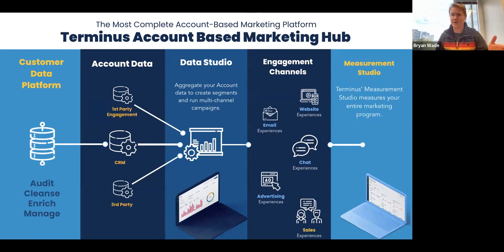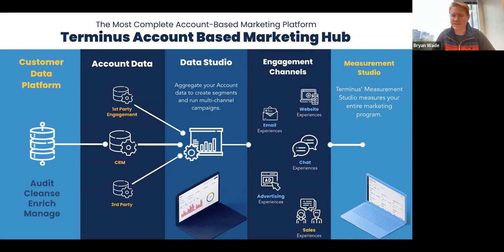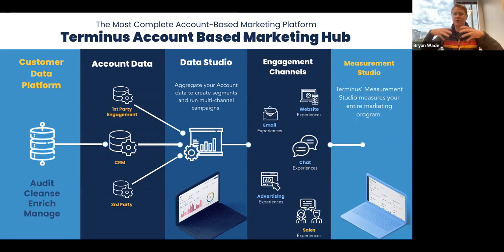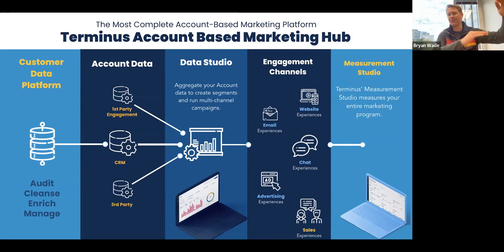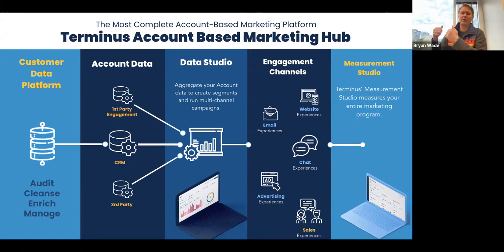It starts with our CDP. Terminus has a customer data platform that aggregates all of your first-party and our third-party data and brings it together into our Terminus Data Studio, or our account hub. That account hub connects into your CRM, your marketing automation, all of your first-party data, and allows you to create dynamic segments or lists of customers or accounts you want to go after. These could be top-of-funnel accounts, customer accounts you want to expand into, or industry/vertical-related segments. Those segments are then pushed into the channels — ad experiences, chat experiences, email, and web experiences.